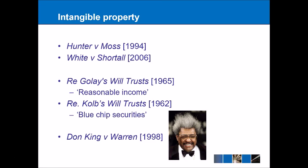Similarly, in Re Kolb's Will Trust 1962, the phrase blue chip securities was used, referring to shares in public companies seen as safe or good investments. However, what constitutes a safe or good investment is again somewhat vague — what one person considers safe may differ from another. So we can't say that is really separately identifiable because of the vague language used in setting up the trust.